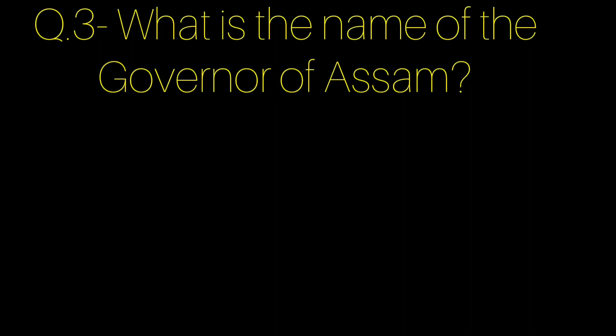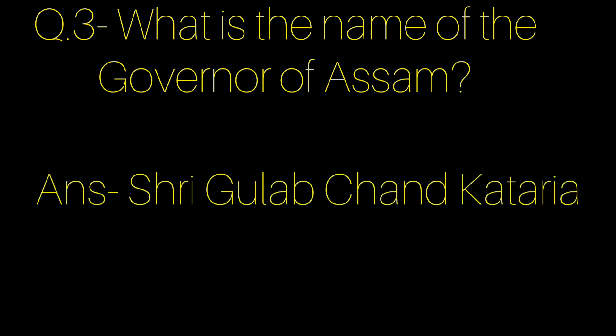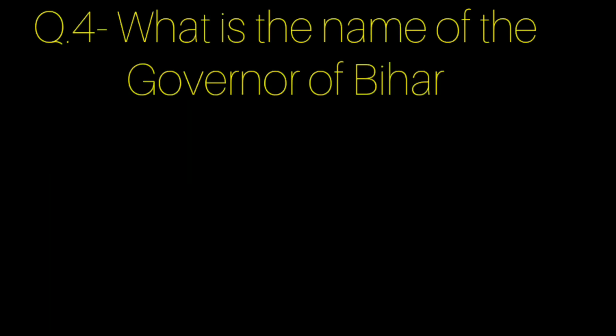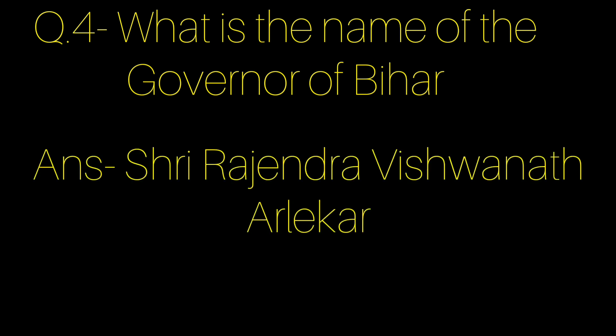Question number 3: What is the name of the governor of Assam? Answer: Shri Glawchand Katariya. Question number 4: What is the name of the governor of Bihar? Answer: Shri Rajendra Vishwanath Arlekar.